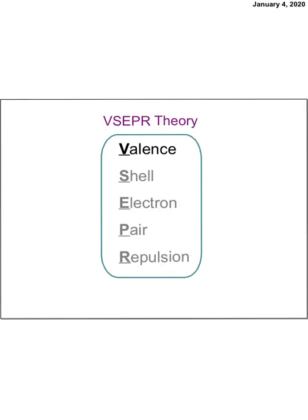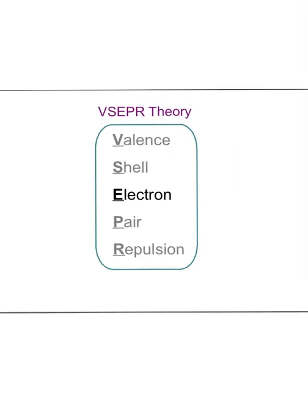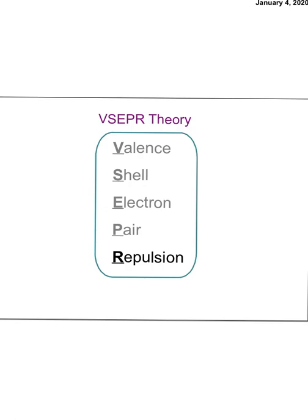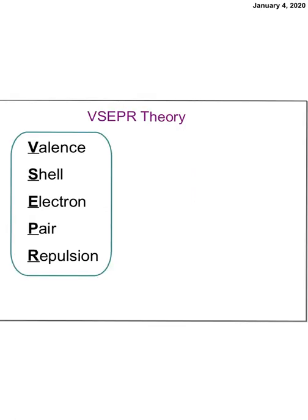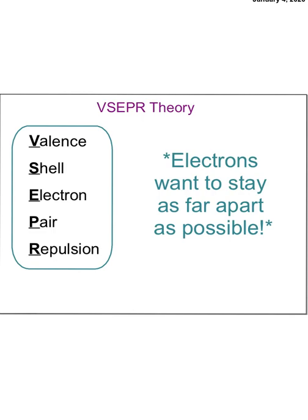VSEPR is an acronym — it stands for Valence Shell Electron Pair Repulsion. The valence shell is the outermost energy level, and those outermost valence electrons repel each other in molecular compounds. The main idea behind all these shapes and geometries is that electrons want to stay as far away from each other as possible, so they make a shape that gives them the most possible room.